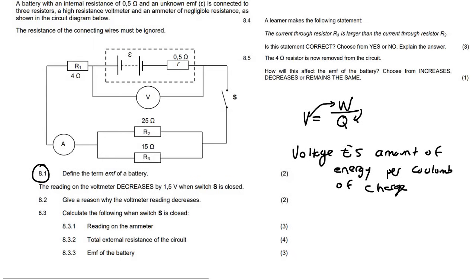For example, if you go to a shop and you buy a 1.5 volt battery — the package says 1.5 volts — that is the EMF. That means that battery, if it operates under perfect conditions, will be able to give you 1.5 joules of energy for every coulomb of charge.